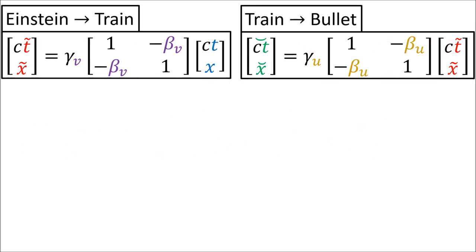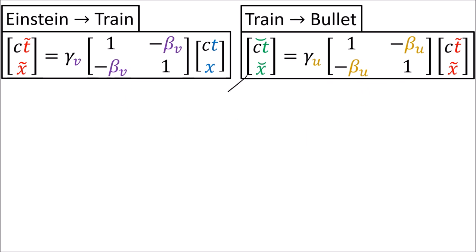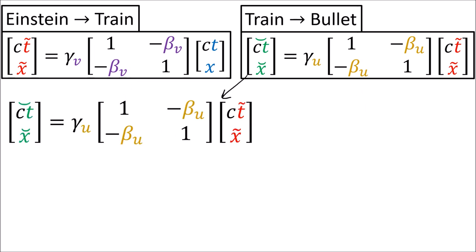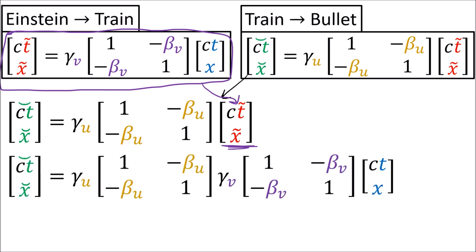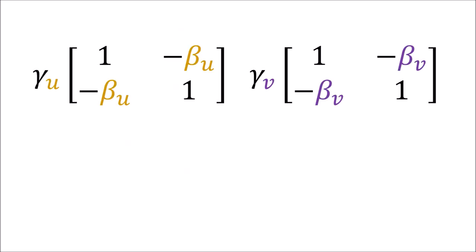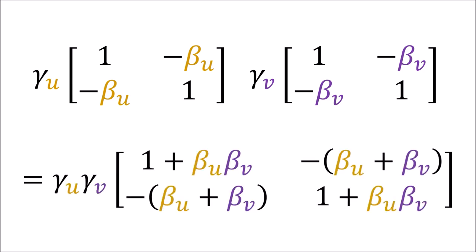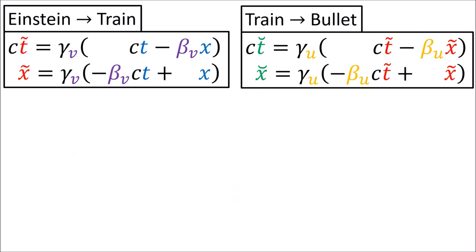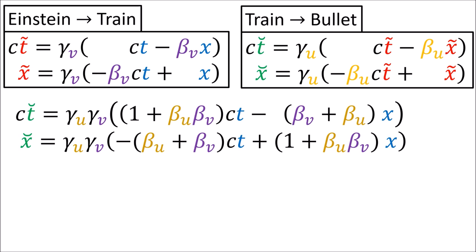Another way to get the same result is to write the Lorentz transformations in matrix form, writing the components in columns and transforming them using a Lorentz matrix. Starting with the matrix equation converting the tilde coordinates into the smile coordinates, we substitute in the column for ct-tilde and x-tilde, then multiply the two Lorentz matrices. You can check that when we multiply these Lorentz matrices, we get a matrix with entries that exactly match the coefficients in our combined Lorentz transformation equations.